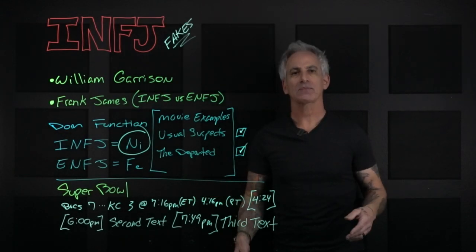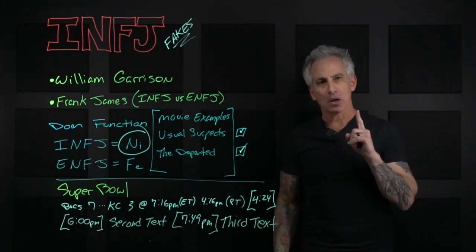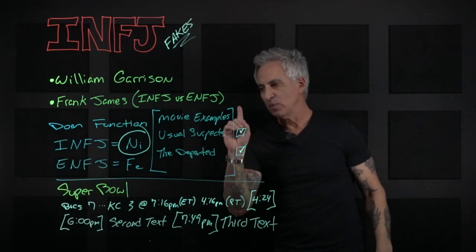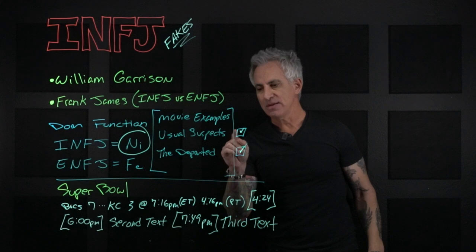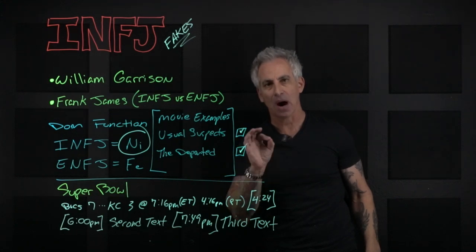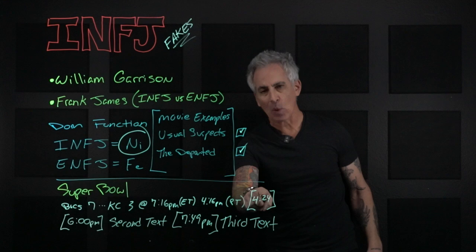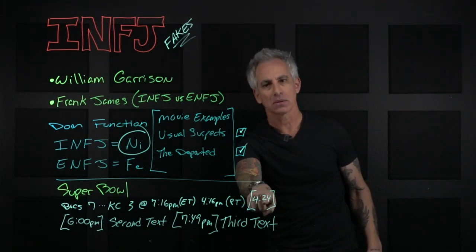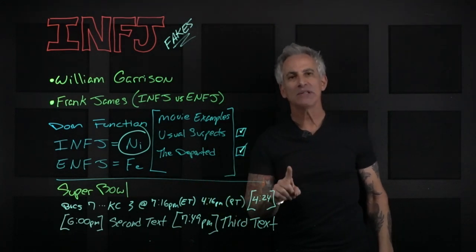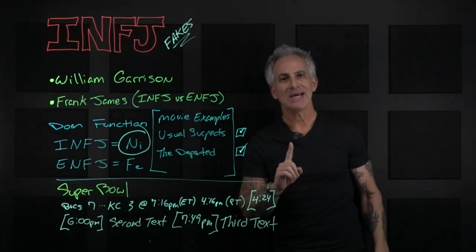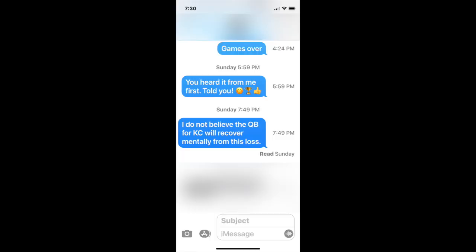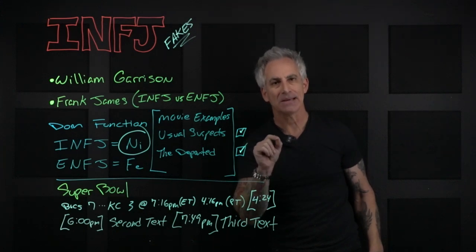Okay, got it? On Super Bowl Sunday, I don't have my glasses on, at the end of the first quarter it was the Bucs 7, Kansas City 3. That was at 7:16 Eastern Standard Time. That is 4:16 Pacific Standard Time. I'm on the West Coast. I texted at 4:24.